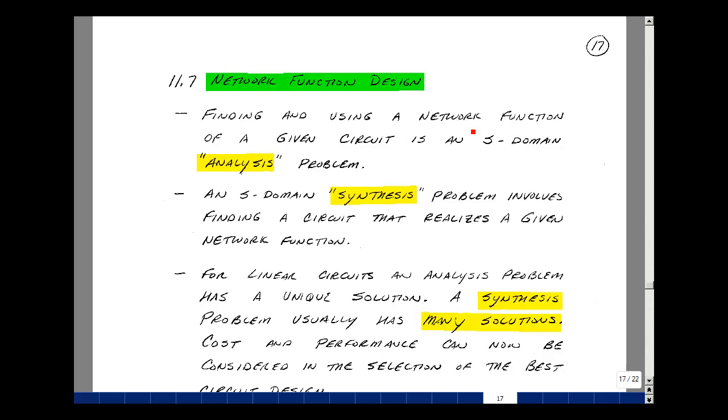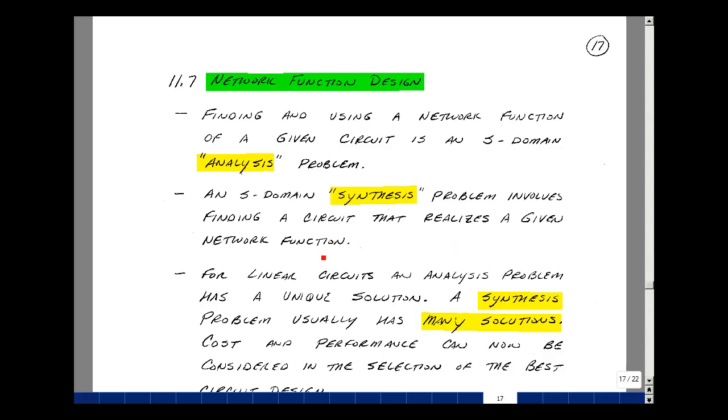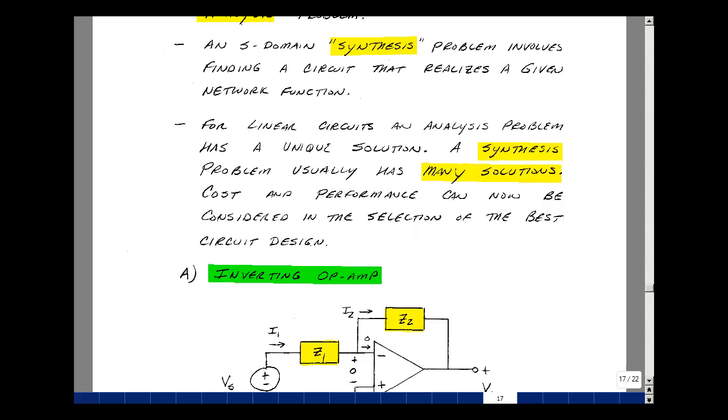Finding and using a network function of a given circuit is an S-domain analysis problem. An S-domain synthesis problem involves finding a circuit that realizes a given network function. For linear circuits, an analysis problem has a unique solution. A synthesis problem usually has more than one solution, and we can consider things like cost and performance in comparing one design to another.